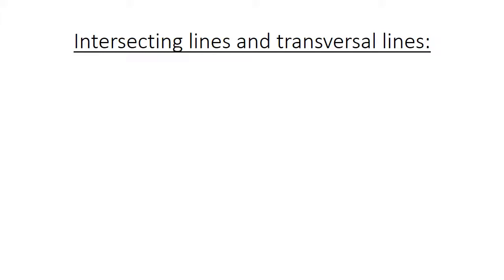Intersecting and transversal lines. An intersecting line is to cross over to each other. Here we have two lines, and it means they are going to cross over.